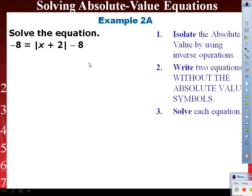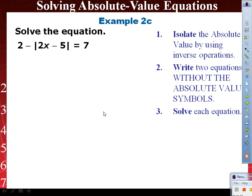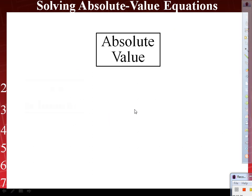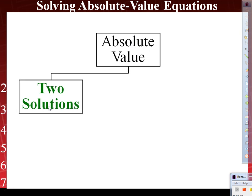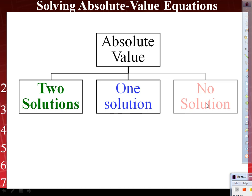From there, we covered equations equal to negatives, equations equal to zero. Then we summarized and said, let's see if we remember. When an absolute value has two solutions, that means the absolute value is equal to what? A positive number. When we have one solution, the absolute value is equal to what? Zero, because there's only one zero. And when the absolute value has no solution, then that means it's equal to what? A negative, because there's no such thing as negative absolute value. Does that make sense?